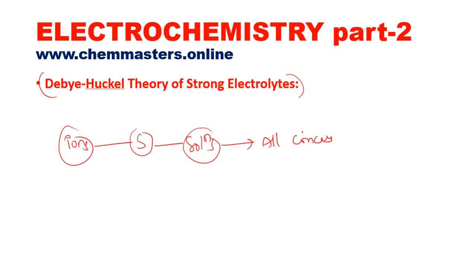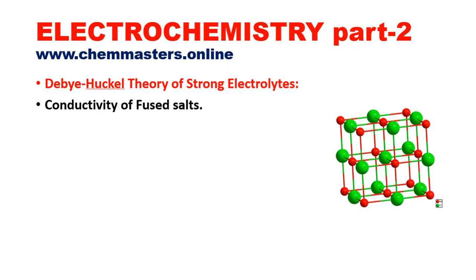We are going to discuss conductivity by observing an example. Here we have taken NaCl, sodium chloride crystal — the solid crystal of NaCl. We know that NaCl is a strong electrolyte. As we said, a strong electrolyte exists as ions even in its solid state. So here we can see NaCl in its solid state exists as ions.